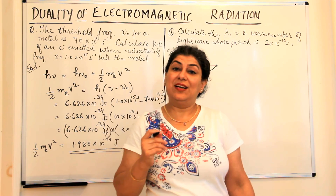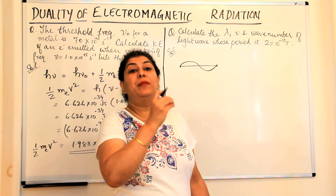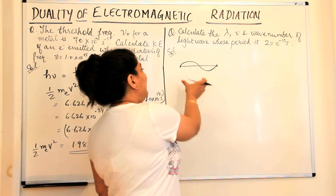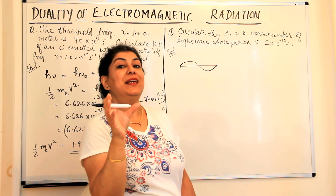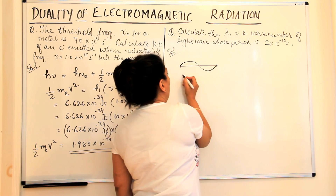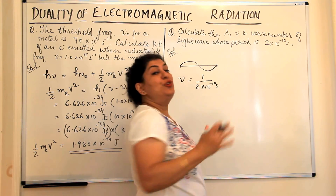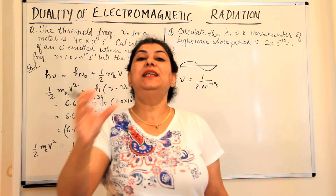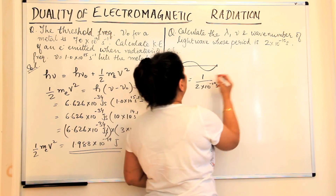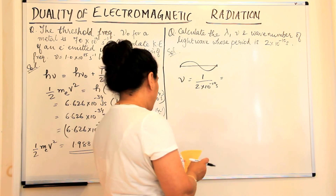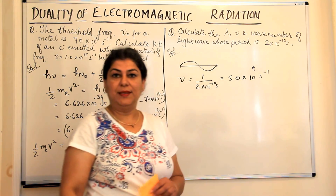So what is frequency? Frequency is the number of waves that pass in one second. If the period is the amount of time for one wave, then frequency is one second divided by the period. The period given is 2 × 10⁻¹⁰ seconds, so frequency equals 1 divided by 2 × 10⁻¹⁰ seconds, which comes to be 5.0 × 10⁹ per second. That is the frequency.